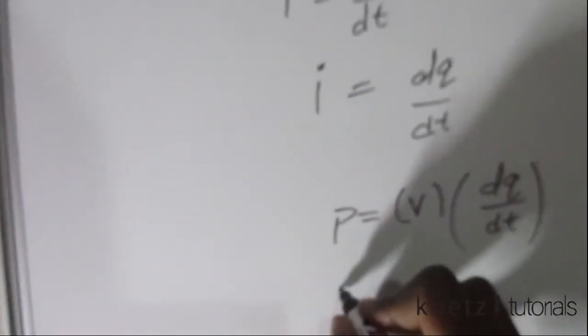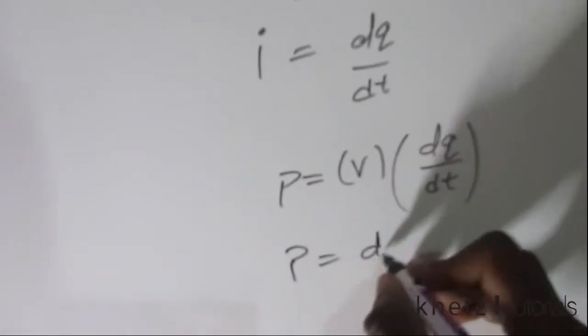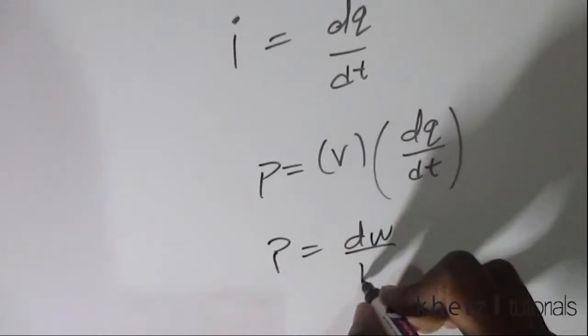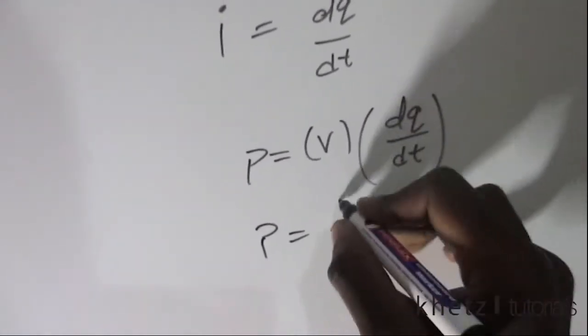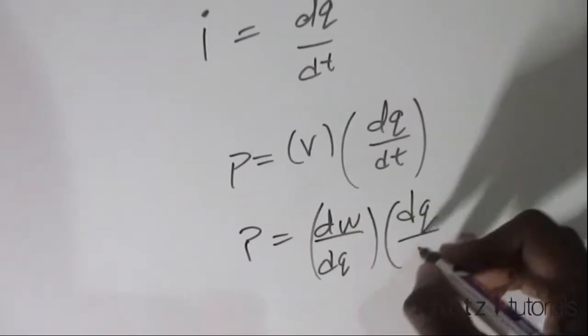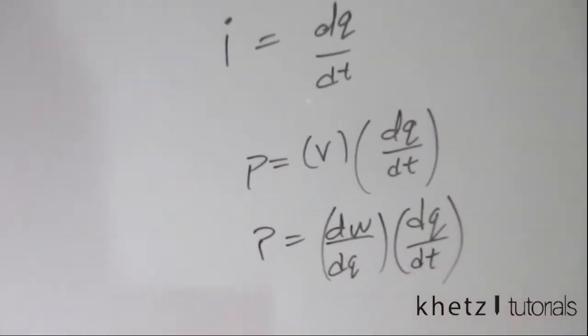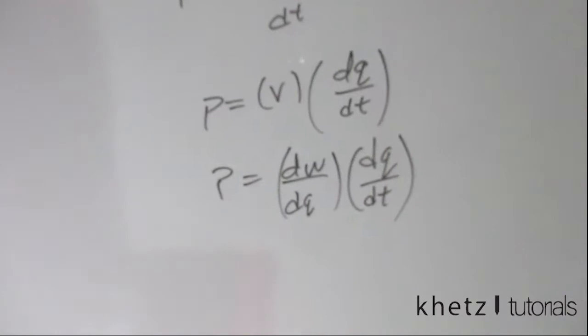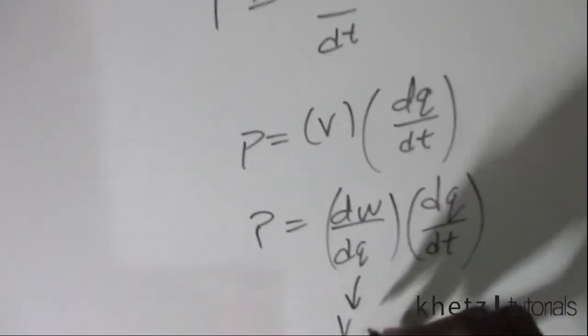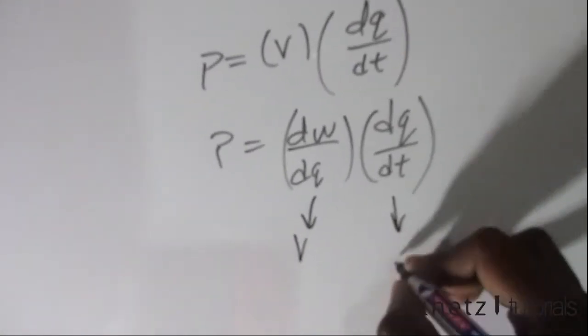The correct answer is P equals dW/dq multiplied by dq/dt. So this represents voltage and this represents current.